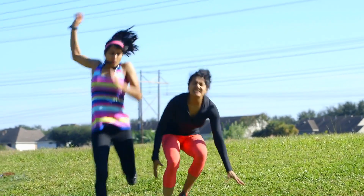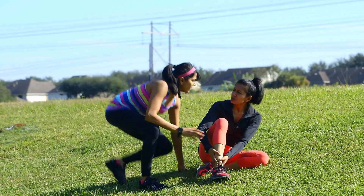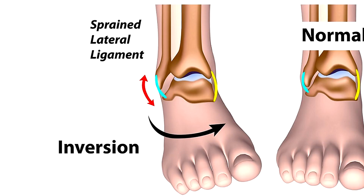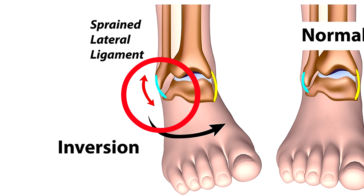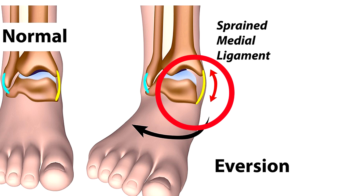You'll see inversion and eversion mentioned a lot when people refer to ankle sprains. For example, an inversion ankle sprain means that the foot's sole turned medially, causing injury to the ligaments on the lateral side of the foot. Eversion ankle sprains have the sole of the foot turning laterally, causing injury to those deltoid ligaments on the medial side of the foot.